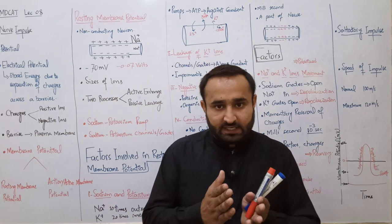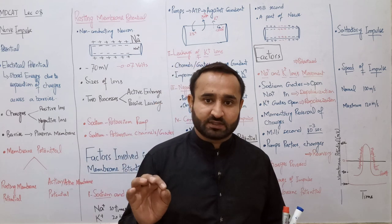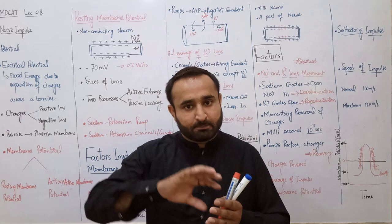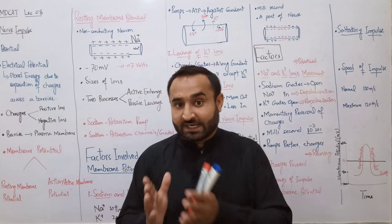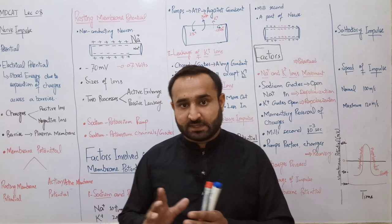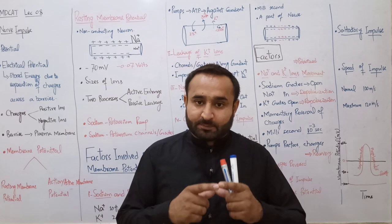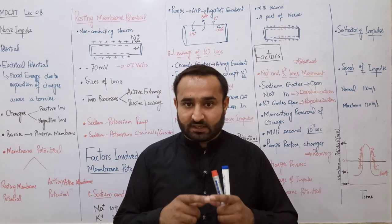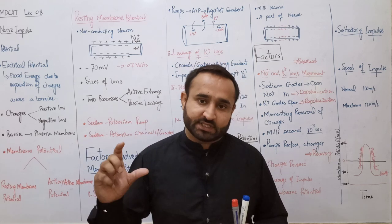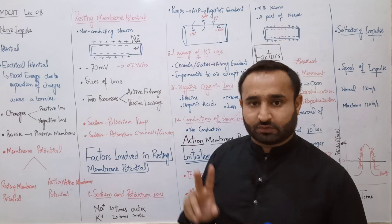Membrane potential دو طرح کا ہوتا ہے۔ ایک جب membrane کے اندر سے nerve impulse conduct نہیں ہو رہی اس کو کہتے ہیں resting membrane potential - جو minus 70 millivolt یا minus 0.07 volts ہوتا ہے۔ دوسرا ہے active membrane potential یا action potential - this is the potential across the plasma membrane of the nerve cell when impulse is being conducted۔